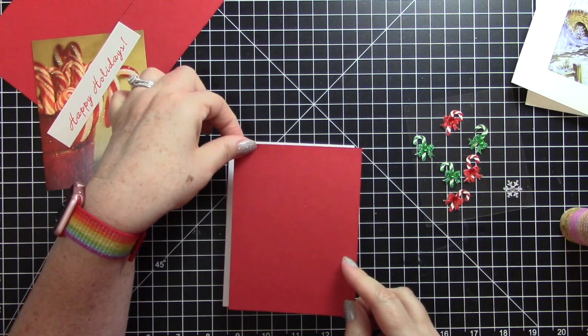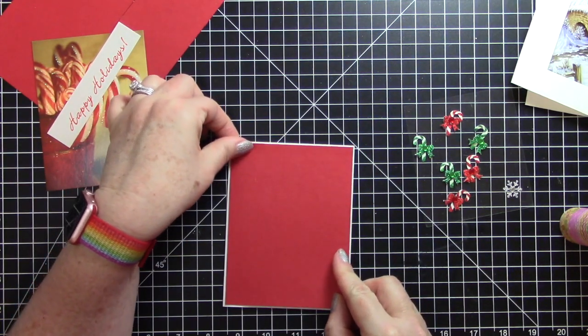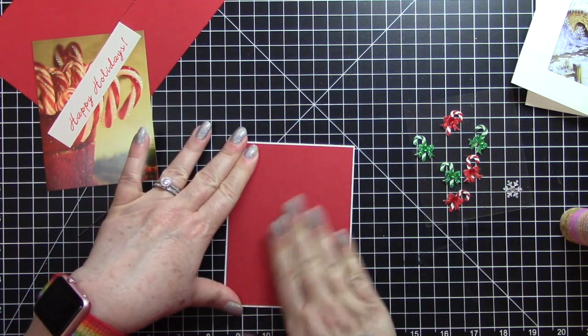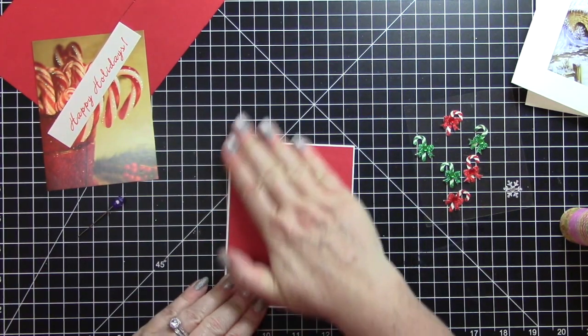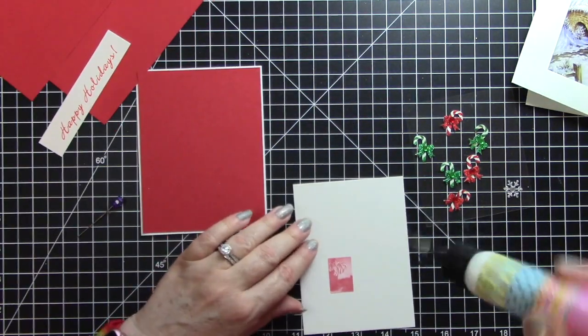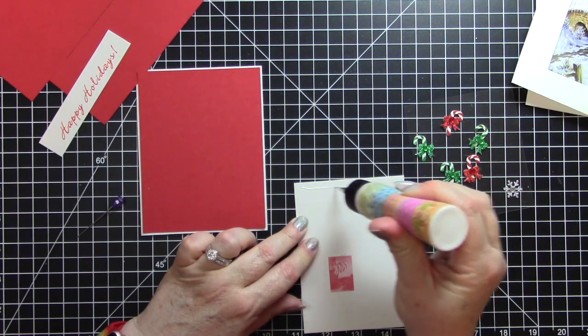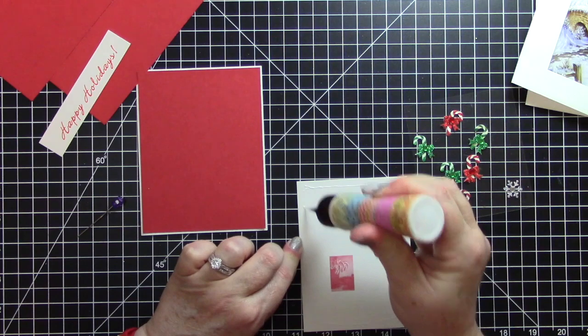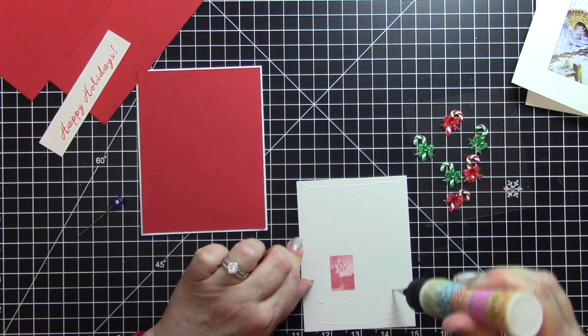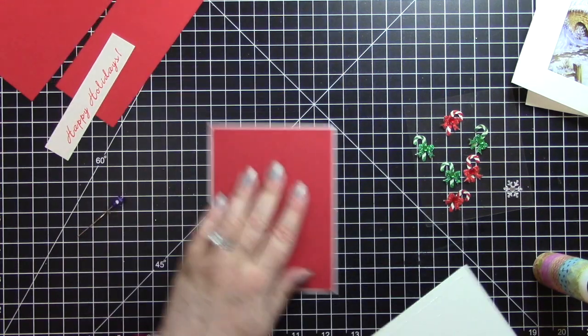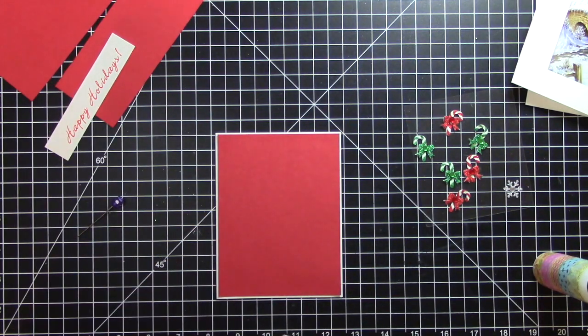Then I will put this one down. I like to use a wet glue when I'm using construction paper. Sometimes I find that the tape tears the fibers of the construction paper.